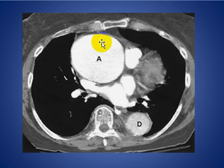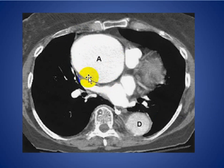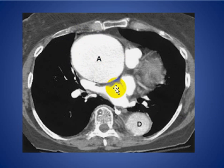Here you see a large mass in the anterior mediastinum. This is an aneurysm of the ascending aorta.